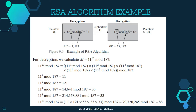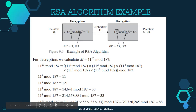We compute: 11 raised to 1 mod 187 is 11. 11 squared mod 187 is 121. 11 raised to 4 mod 187: 121 squared mod 187 gives 157. 11 raised to 8 mod 187: 157 squared mod 187 gives 154. Combining these results using modular multiplication, we get the final answer as 88.